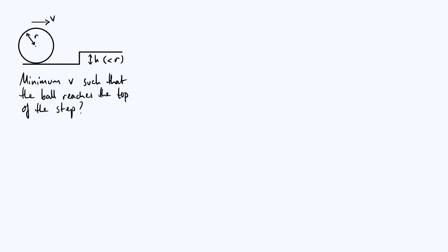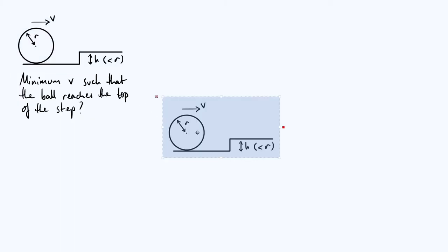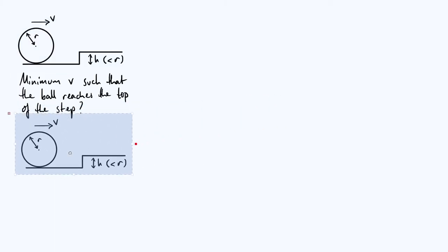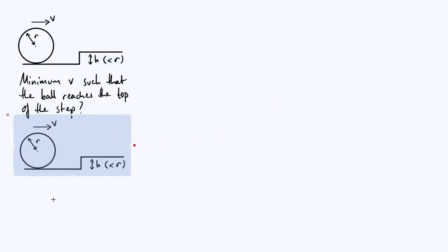In order to analyze this system I'm going to split the motion of the ball up into two stages. The first stage is going to be the initial collision between the ball and the step, and then we're going to think about what happens subsequently to that later on in the video. I'm going to copy this diagram up here and think about the initial conditions of the collision.